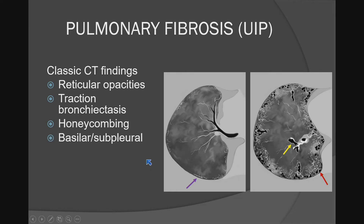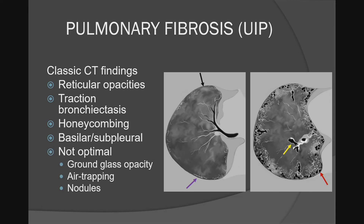Their predilection — and this is not a finding, but a location — is basilar subpleural predilection. Those are the big four for IPF-UIP or PF-UIP. As mentioned, non-optimal findings include ground glass, mosaic attenuation, air trapping, and nodules, which are obviously not a good thing for UIP-IPF.